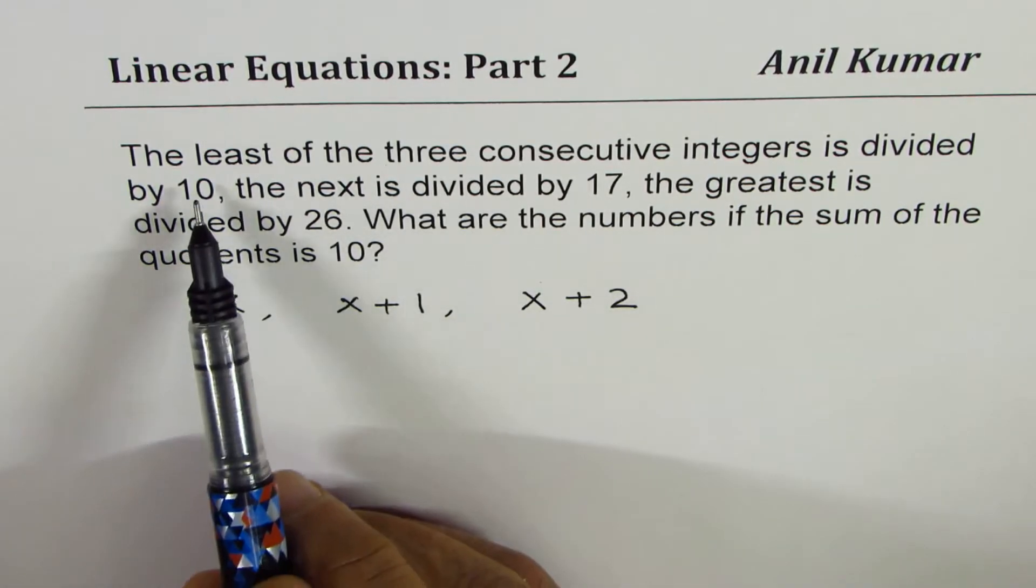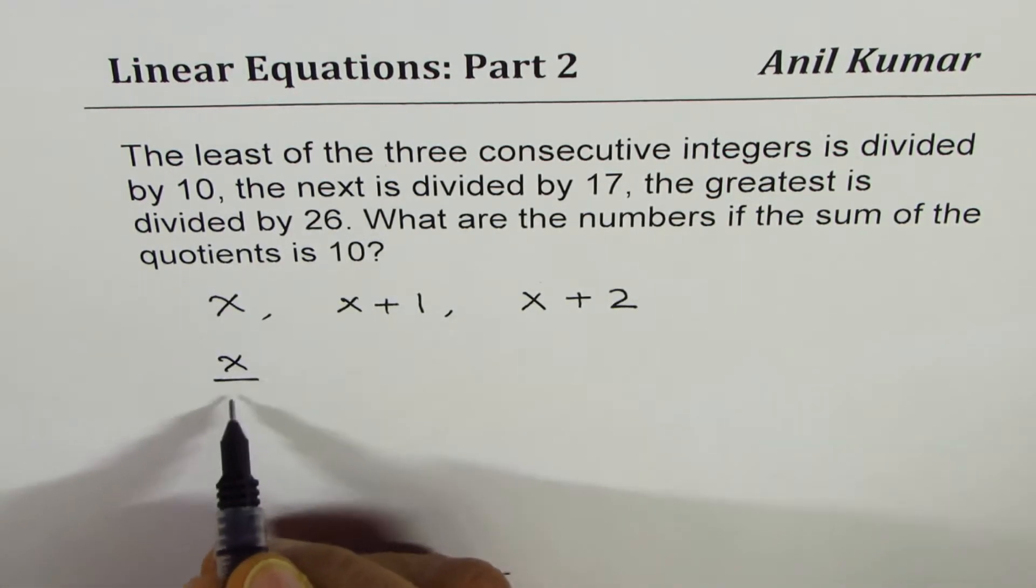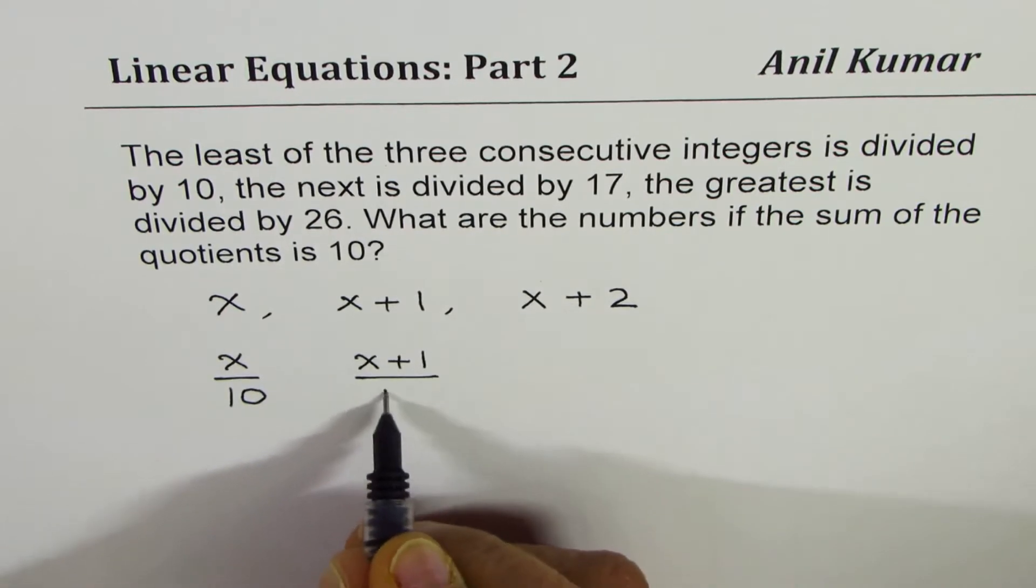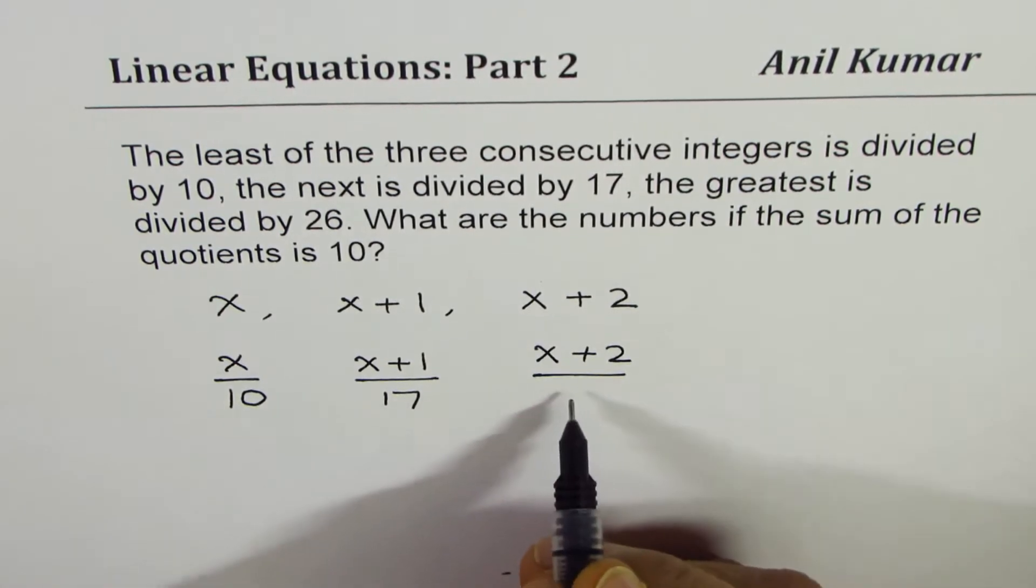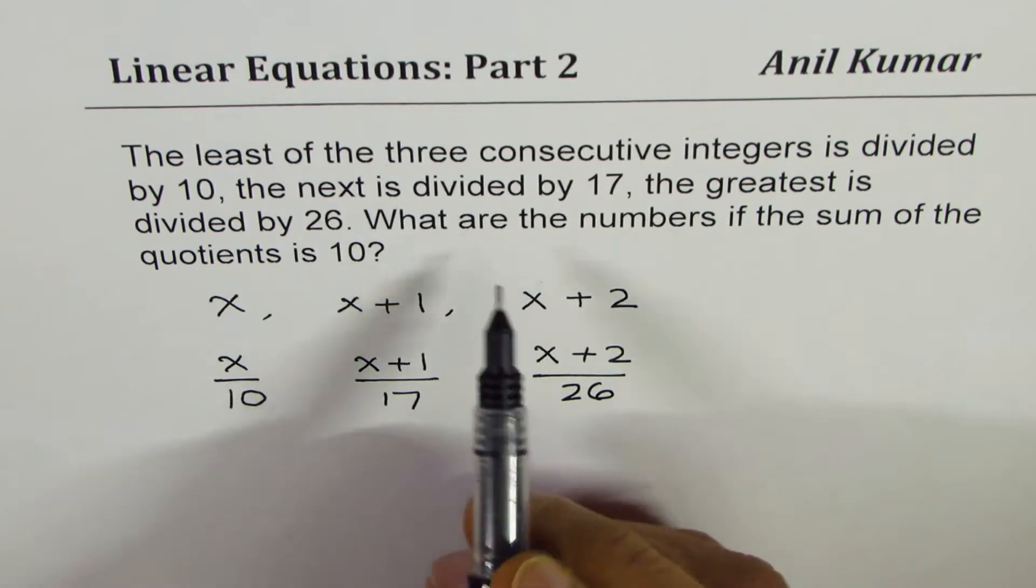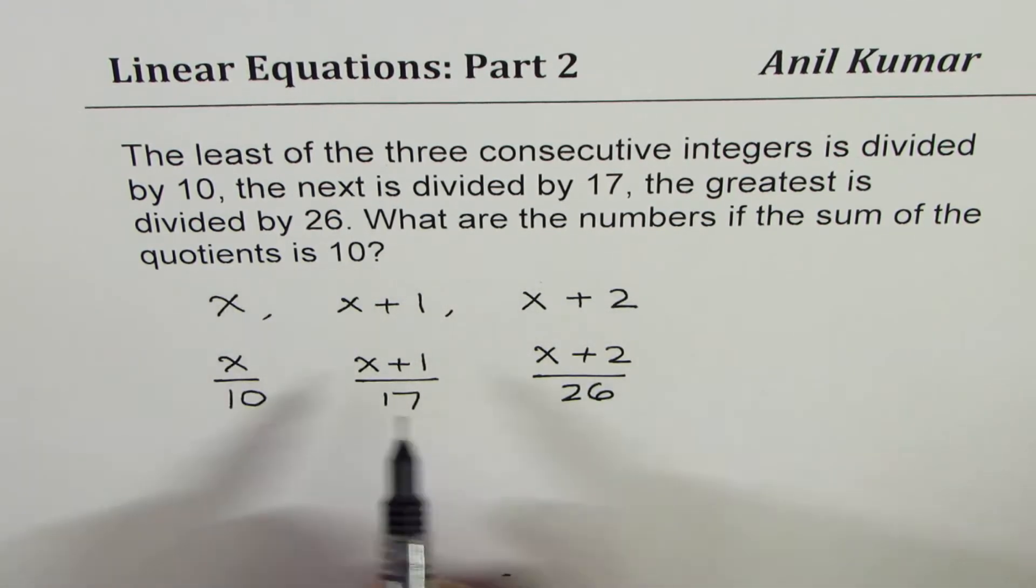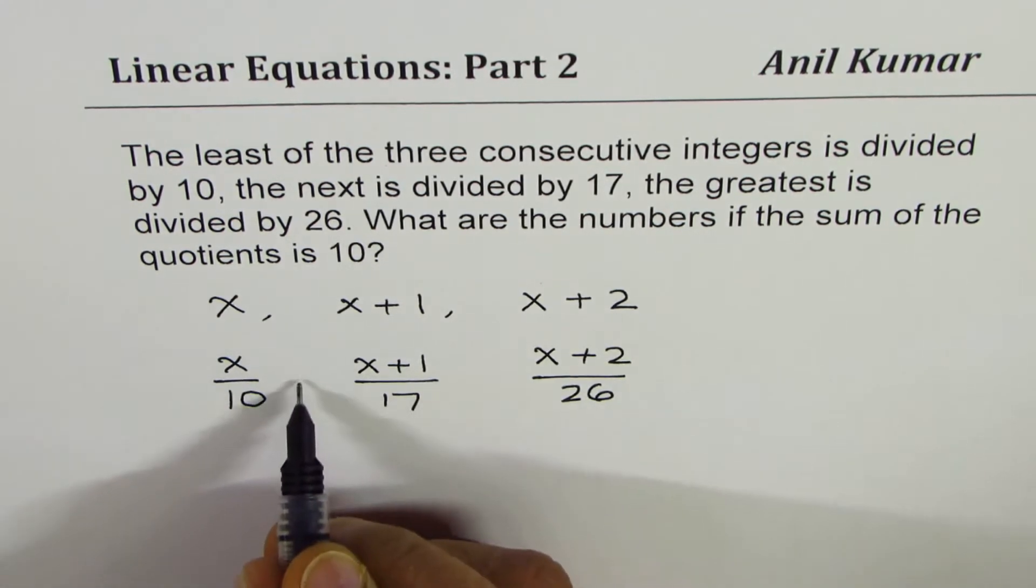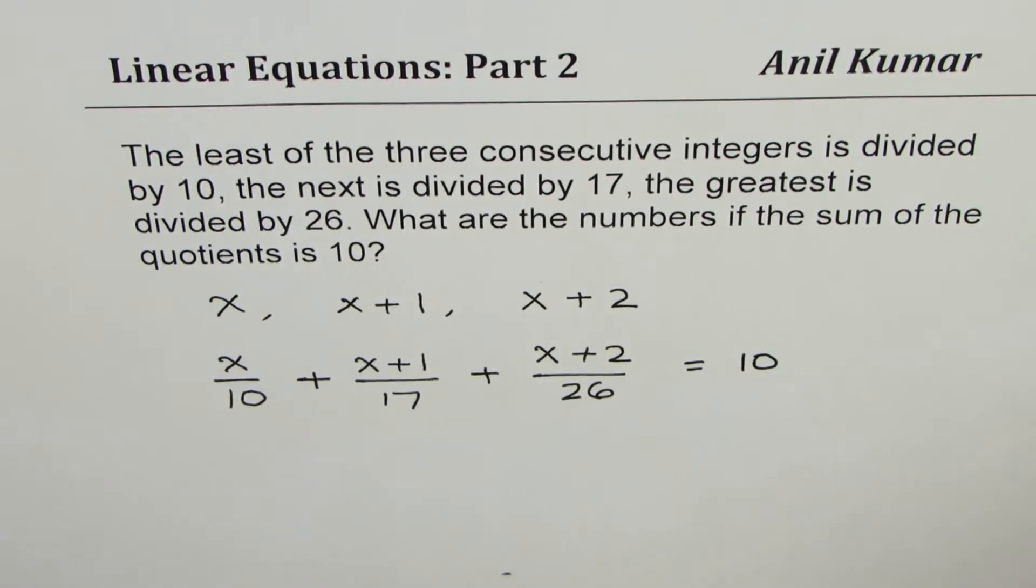Now what is given to us is the least of the three consecutive integers is divided by 10, that is to say x is divided by 10. The next is divided by 17, x plus 1 is divided by 17. The greatest is divided by 26, that is x plus 2 is divided by 26. What are the numbers if sum of the quotients is 10? Sum of the quotients means when you divide a number by the other, whatever you get is the quotient. So that sum means add them up. So that is how you can form the equation from the given conditions.